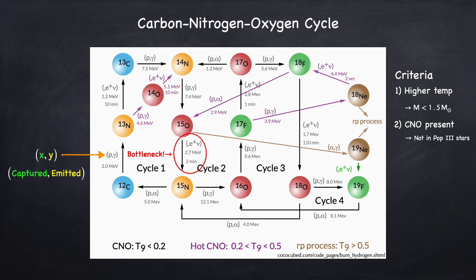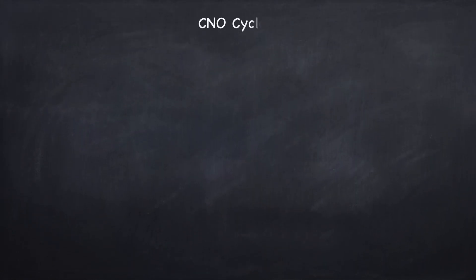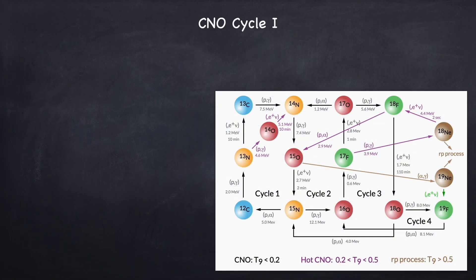So that's the basic idea — you have these four cycles, each one of them results in converting four protons into an alpha particle or a helium nucleus, and then you also have the hot CNO sub-cycles. Now, as we did with the proton-proton chain, I want to set up a set of differential equations for the CNO cycle. But setting it up for the entire cycle, which would include four sub-cycles plus the hot CNO cycle, would be very long and tedious. So I'm just going to do it for cycle one. If you want to do the other cycles on your own, it's exactly the same process.